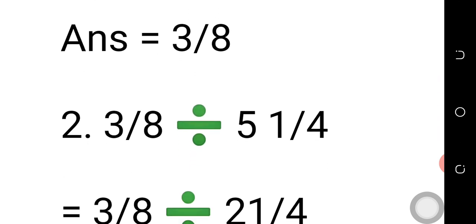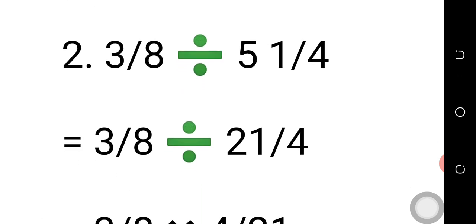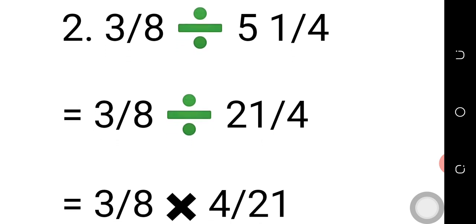The second question is three over eight divided by five and one over four. Once again, three over eight divided by five and one over four. One is a proper fraction while the other is a mixed fraction. You change the mixed fraction to an improper fraction. That is three over eight divided by — five times four is twenty, plus one is twenty-one, therefore twenty-one over four.